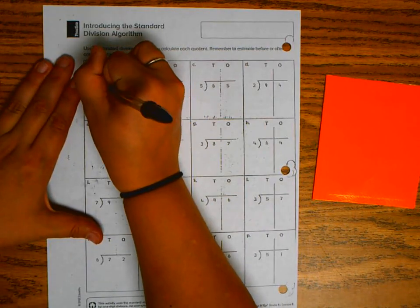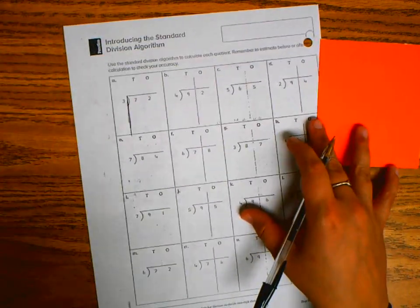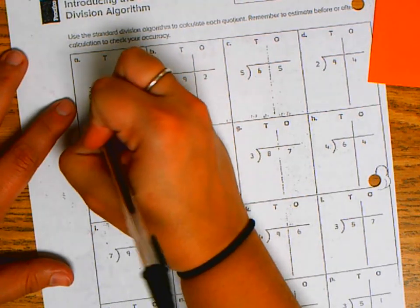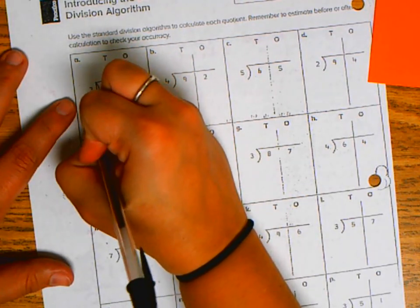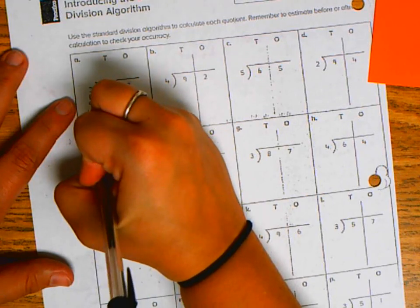So again, I'm just extending this line down. And I'm going to write my multiples. So that's 3, 6, 9, 12, 15, 18, 21, 24, and 27.